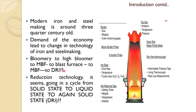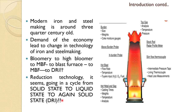It looks like we are going in a cycle. If you look at it another way, the reduction technology also seems to be going in a cycle — from solid state as in the bloom, then to liquid state in the blast furnace with liquid iron and slag, and again going back to solid state with DRI, and then using electric arc furnaces or other devices to make steel. So it seems again it is going in a cycle.